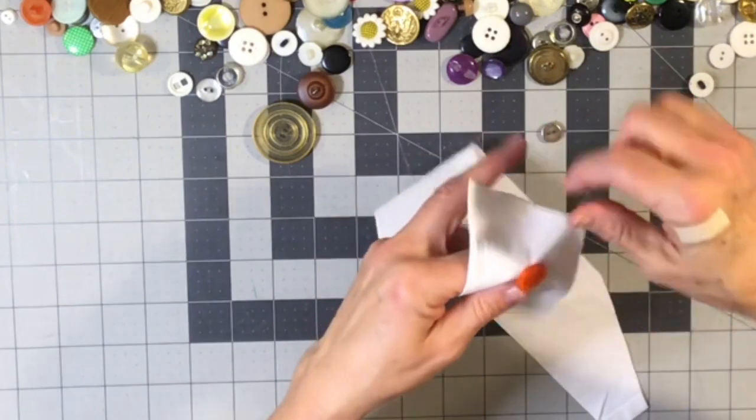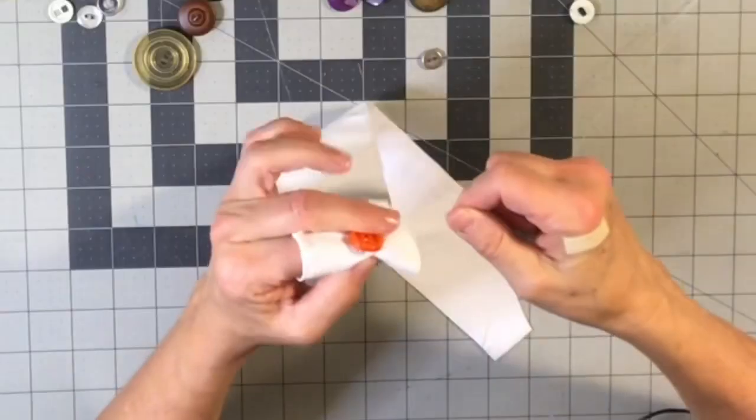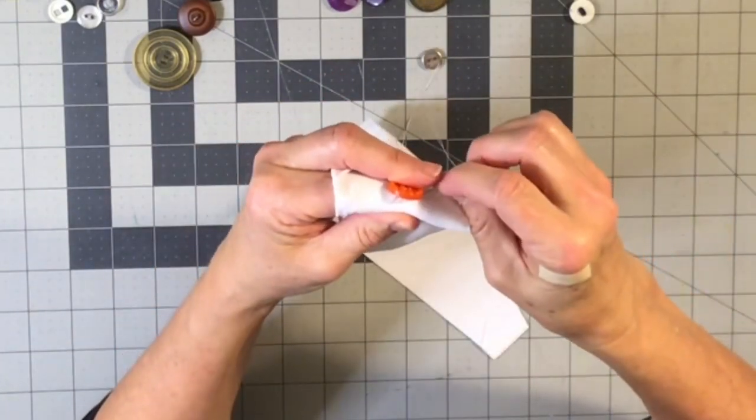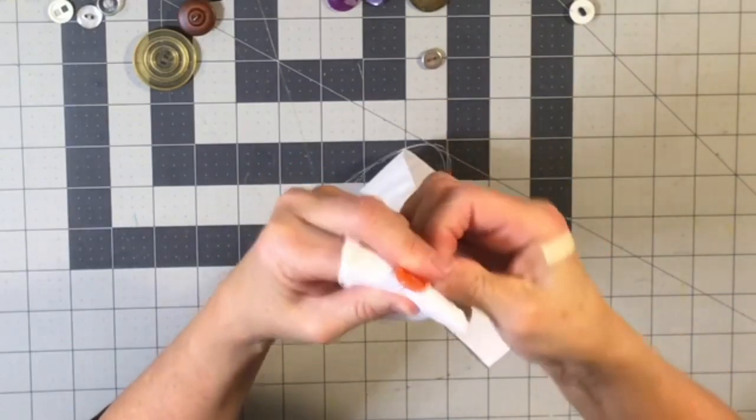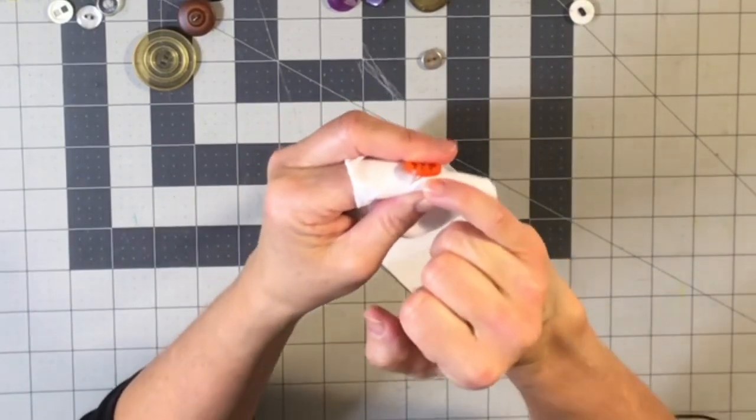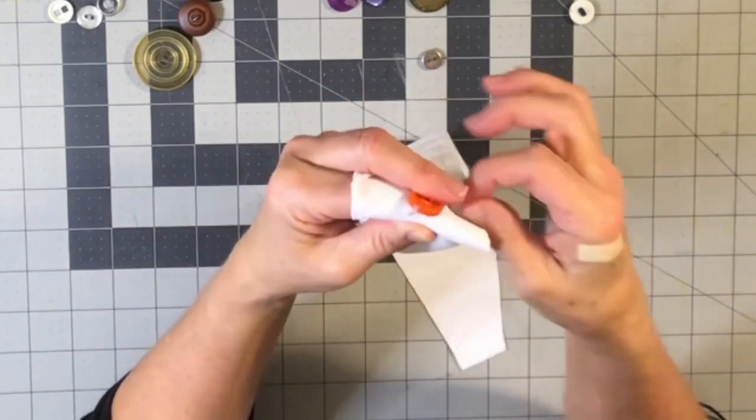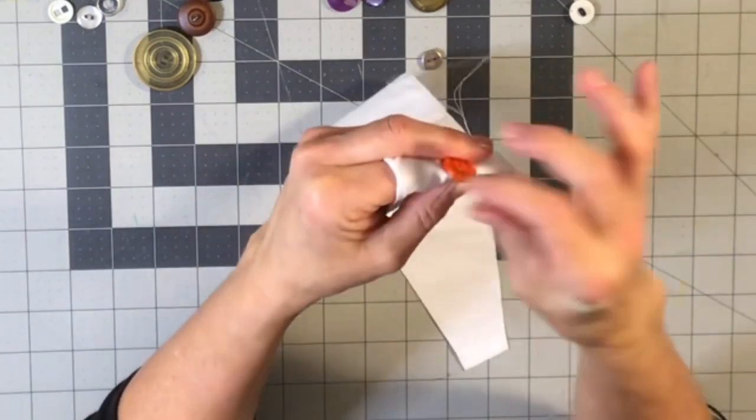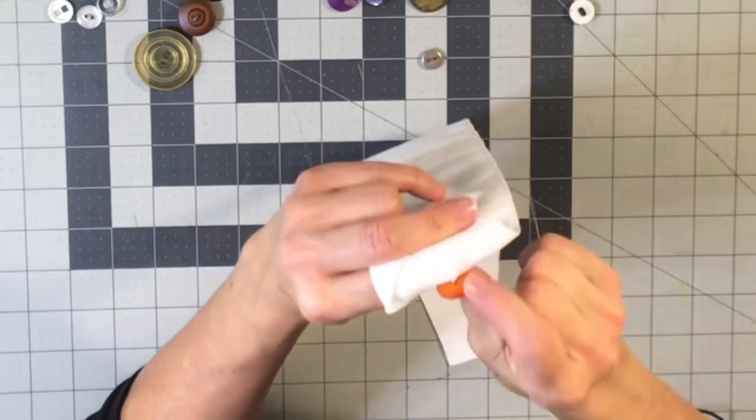And what I do is just wrap it a couple times and then right under here, I go through this area right at the base, into the thread, into the fabric at the base of the thread. Push your needle through. Make sure there's no loops on this side.